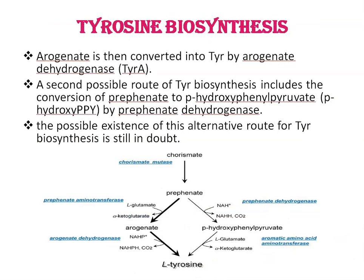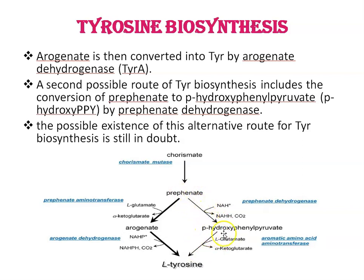Next is tyrosine biosynthesis. The major route of tyrosine biosynthesis initiates from chorismate, using the same first two enzymes of phenylalanine biosynthesis — namely chorismate mutase and prephenate aminotransferase — to produce arogenate. Arogenate is then converted into tyrosine by arogenate dehydrogenase. A second possible route of tyrosine biosynthesis includes the conversion of prephenate to p-hydroxyphenylpyruvate by prephenate dehydrogenase, but the possible existence of this alternative pathway for tyrosine biosynthesis is still in doubt.